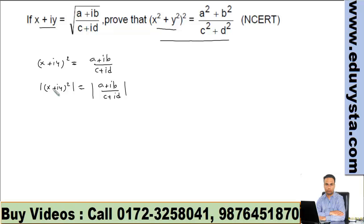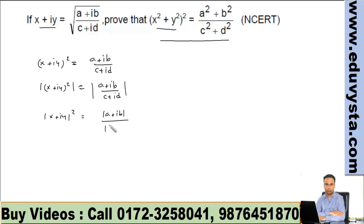Now here we can use the property of modulus: |x + iy|² on the left, and on the right it is distributive over a ratio, so it becomes |a + ib| / |c + id|.